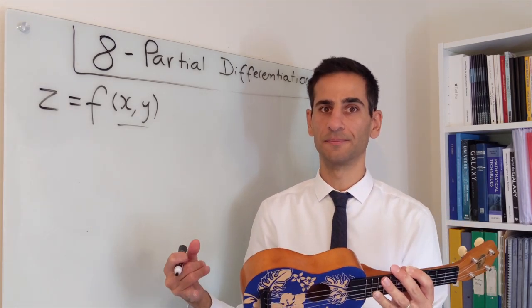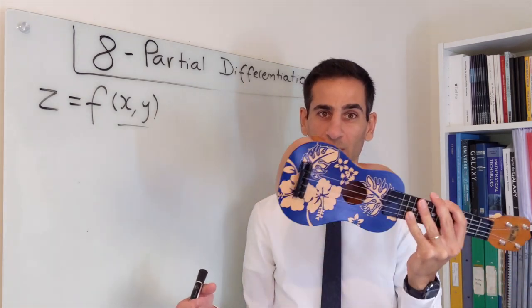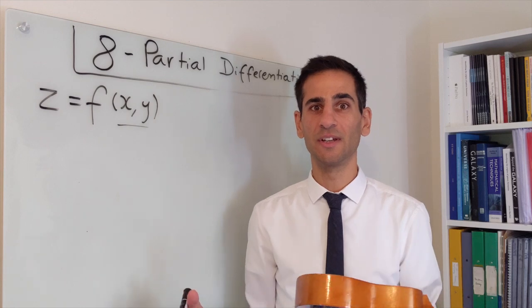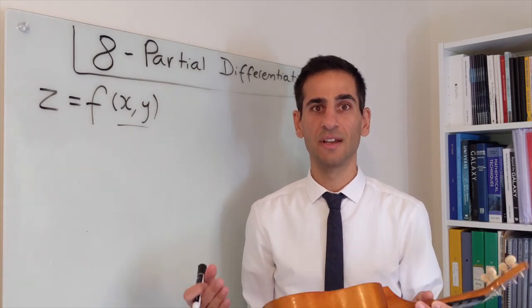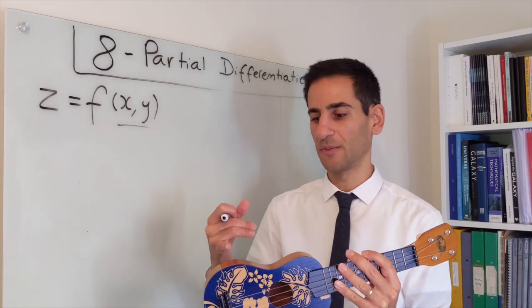The important question now is not how we do it with the ukulele, but how do we do it with any surface? How do we calculate these partial derivatives or derivatives when we fix one direction and just go along the other?